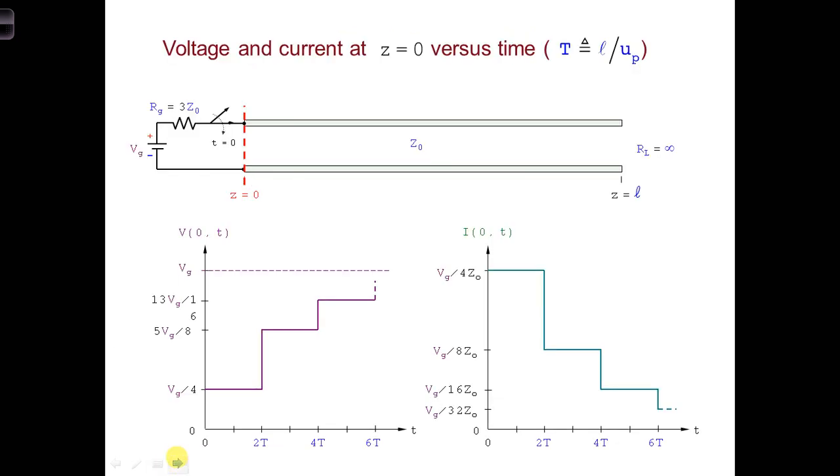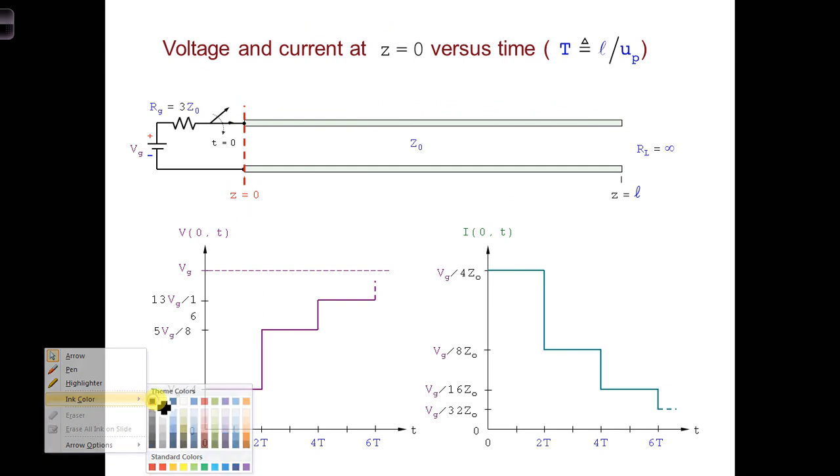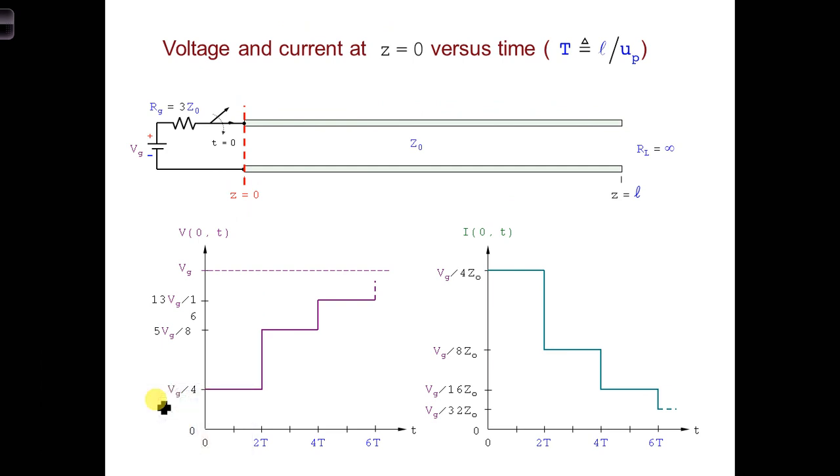And here is the solution. Notice that the voltage and the current is equal to V1 plus and I1 plus, until enough time has elapsed for the wave to propagate all the way down the transmission line and back again.